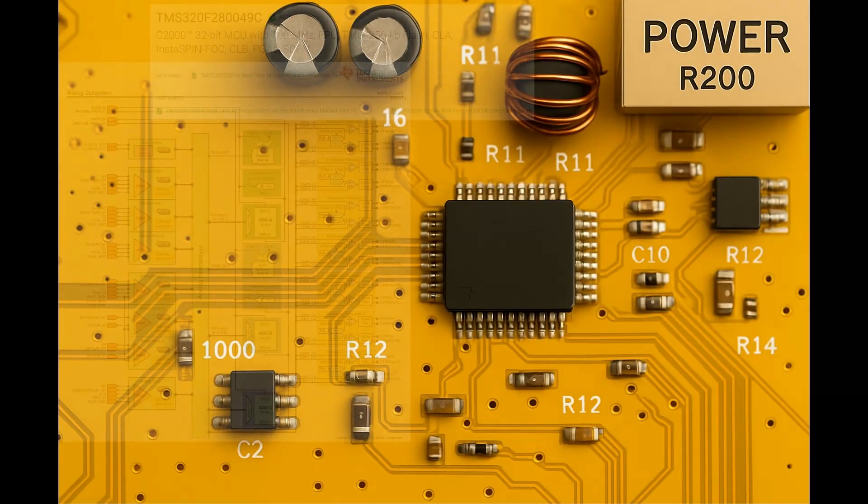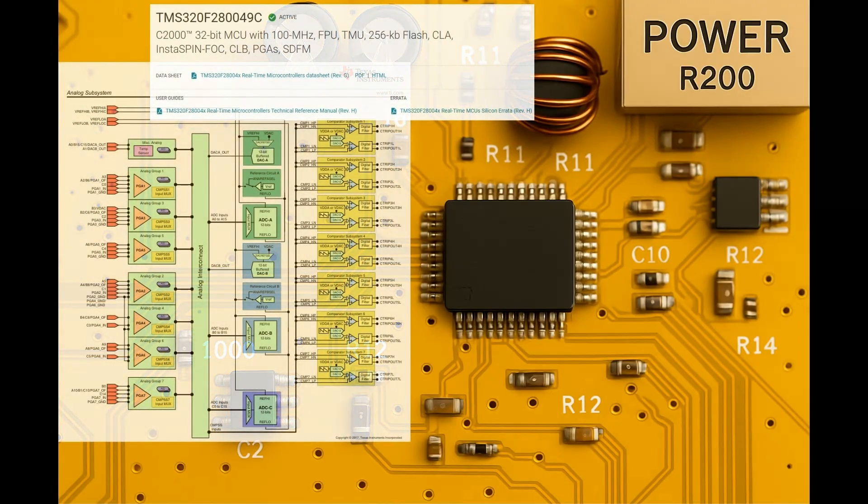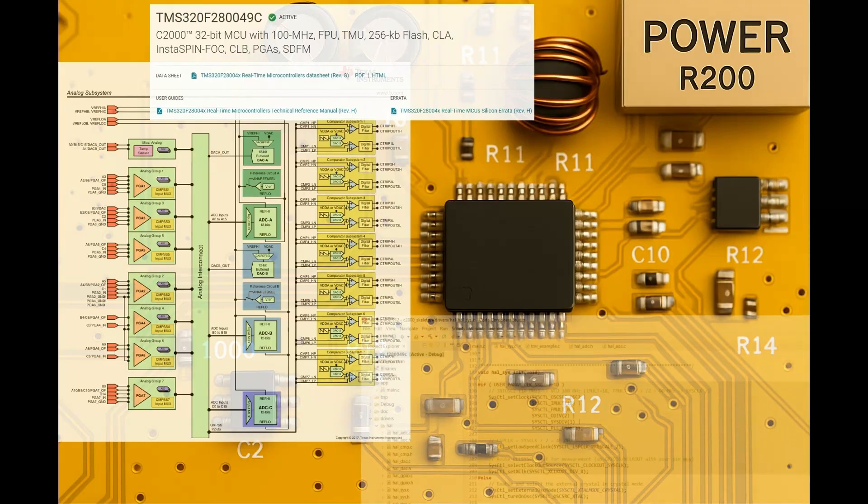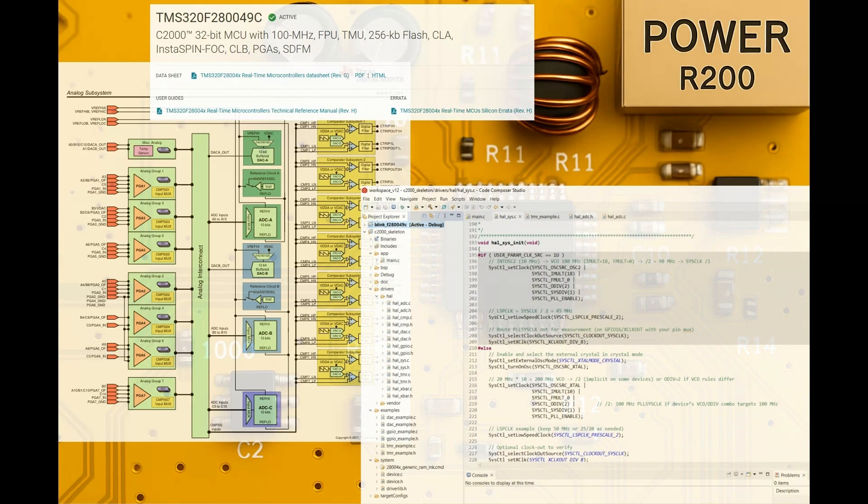Getting started with C2000 can be overwhelming - so many peripherals, configuration options and reference manuals. In this course, I guide you step by step, simplifying each subsystem and showing you exactly how to build code that works on real hardware.